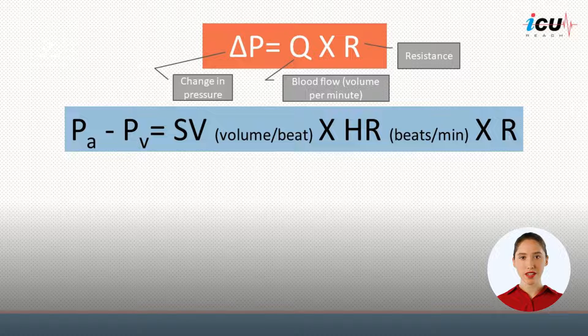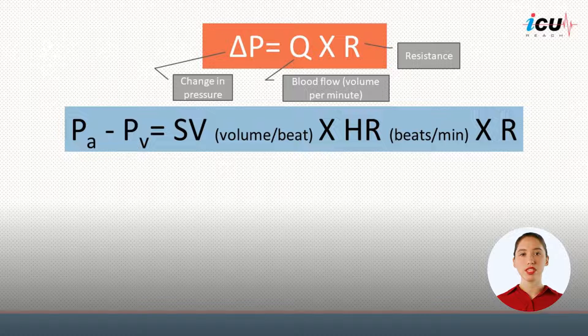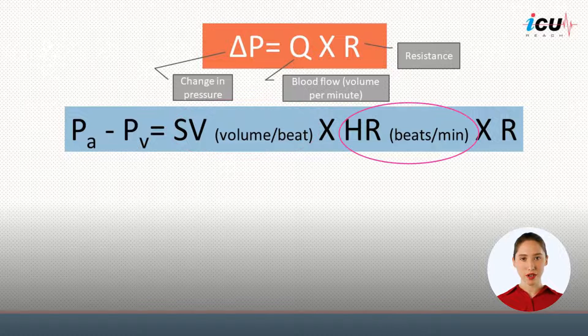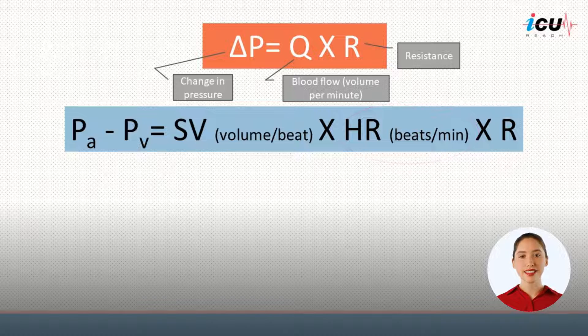Let's break it down. Change in pressure in the vascular system is the arterial pressure minus venous pressure. Q is the flow of blood, or the cardiac output, which equals stroke volume (defined as the amount of blood ejected per beat) times the heart rate (which is beats per minute), and then this is all multiplied by the vascular resistance.